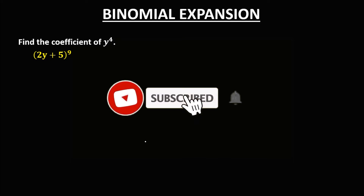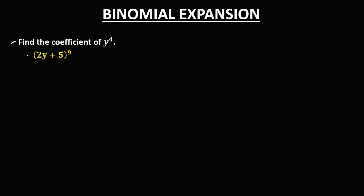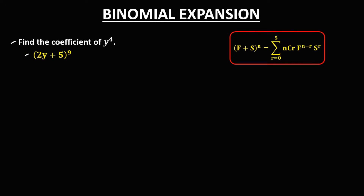Let's solve this problem. Find the coefficient of y to the power 4 from this binomial equation. Using this binomial expansion formula, in the given, the first term is 2y, the second term is positive 5, and n — that's the exponent outside.